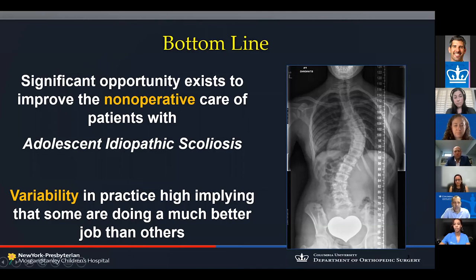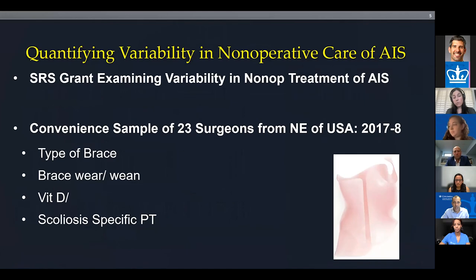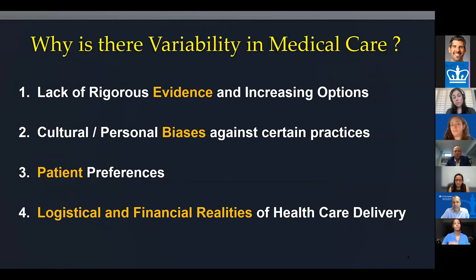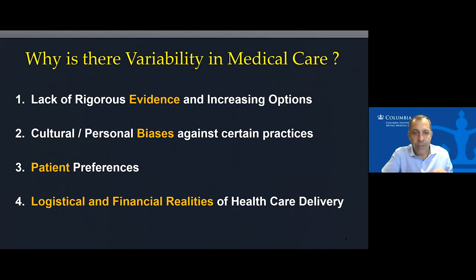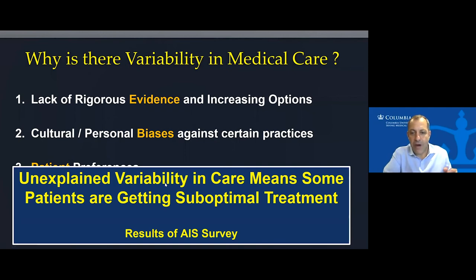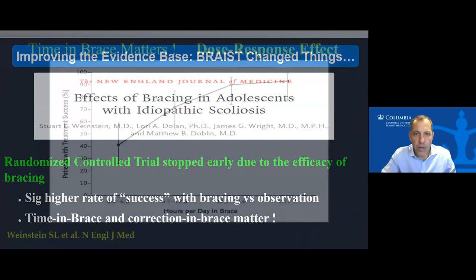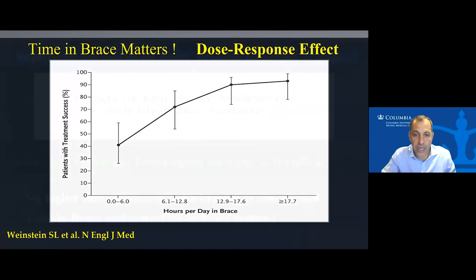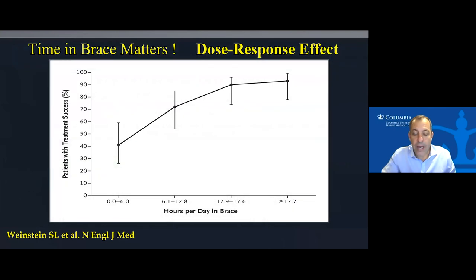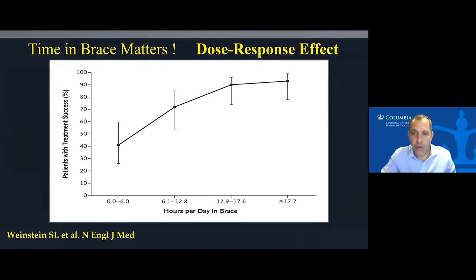The bottom line is that there's a significant opportunity to improve the non-operative care of patients with AIS, and there's a lot of variability in this space. Variability happens because of a lack of evidence about the best options and cultural biases. There was a great randomized trial showing that bracing works, with significantly higher success rates when patients wore the brace at least 15 to 18 hours a day. No one should be failing to offer bracing for the right patients these days.